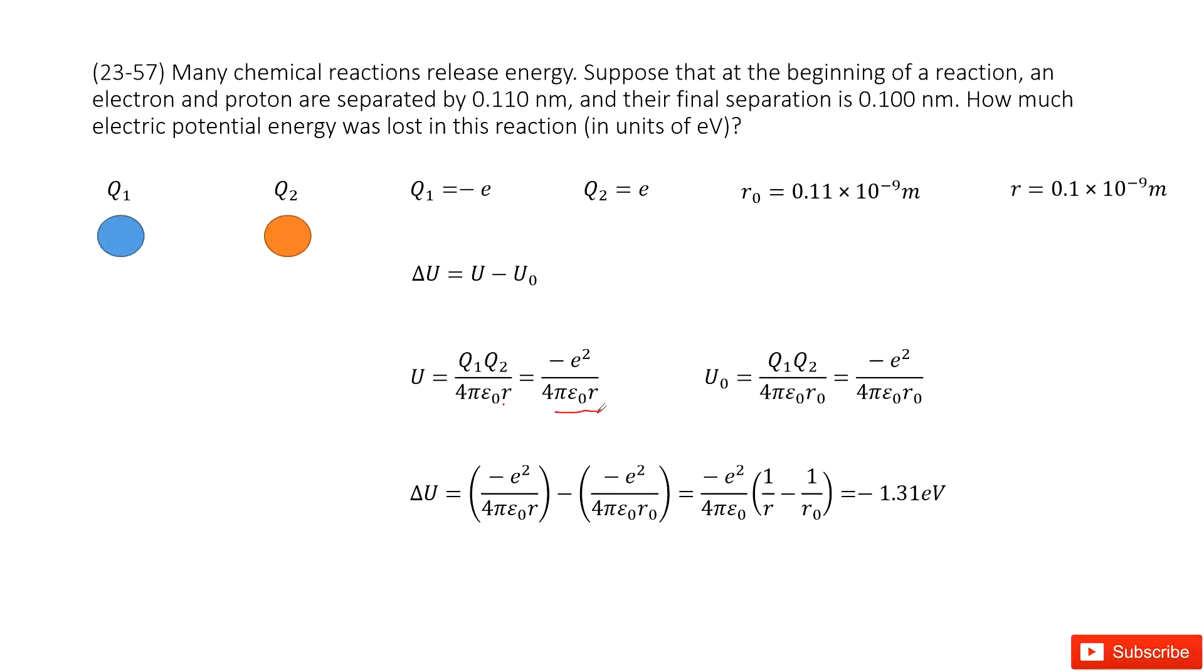Initial potential energy is Q1 Q2 over 4 pi epsilon naught R naught. And then we input Q1, Q2 inside, we get a function look like this one.